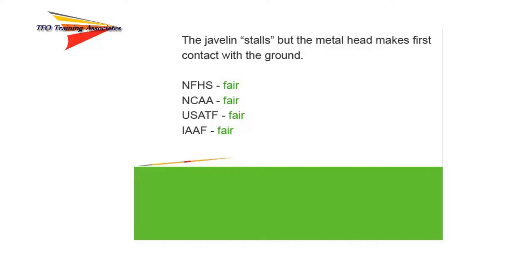In this first scenario, the javelin stalls or does not follow a customary flight path. However, as it descends, the metal head drops and it makes first contact with the ground. In all jurisdictions, this is a valid throw and is measured from the point where the metal head first makes contact with the ground.